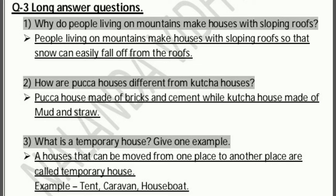Second long answer: how are pukka houses different from kuccha houses? Answer: pukka house is made of bricks and cement, while kuccha house is made of mud and straw. दोनों में यह difference है कि pukka house अलग material से बनता है और kuccha house भी अलग material से बनता है.